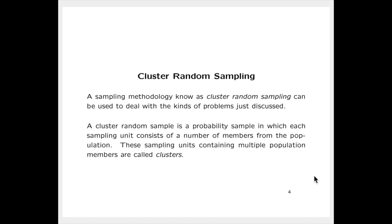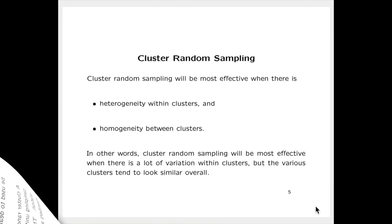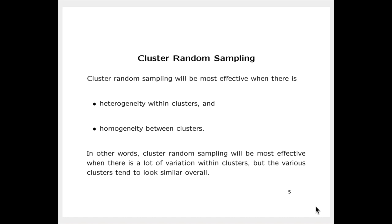A cluster random sample is a probability sample in which each sampling unit consists of a number of members of the population. These sampling units containing multiple population members are called clusters. Cluster random sampling will be most effective when there is heterogeneity within clusters and homogeneity between clusters — in other words, when there is a lot of variation within clusters, but the various clusters tend to look similar overall.